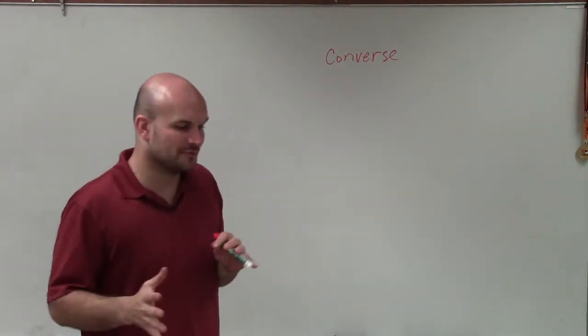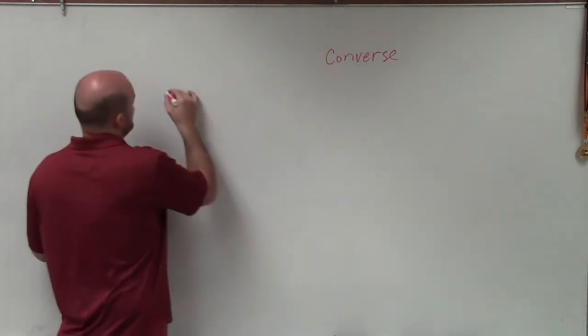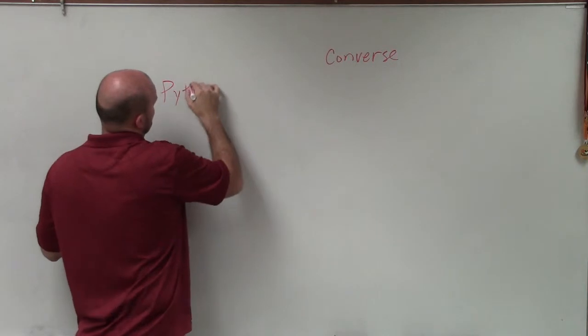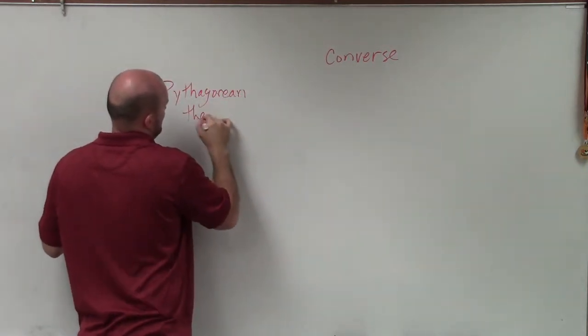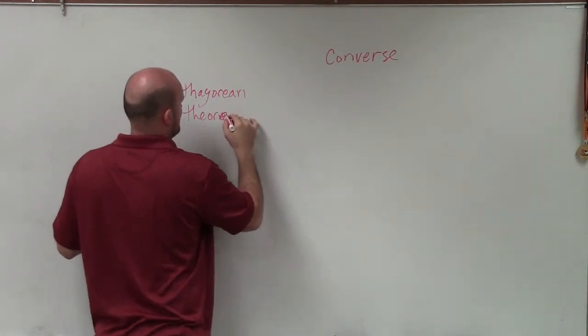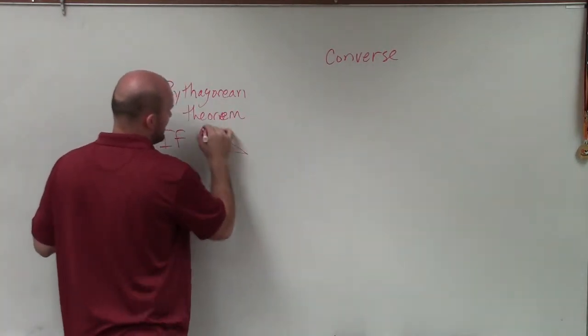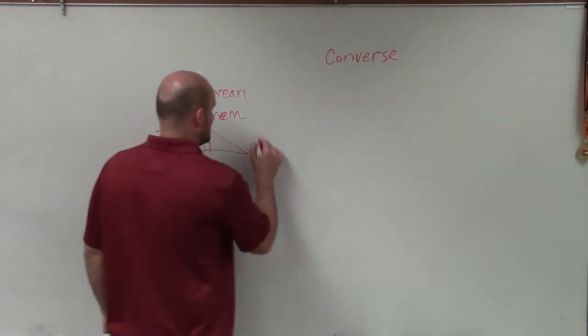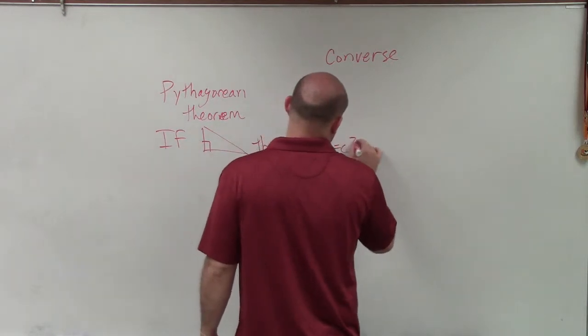So I'm going to use some notation to represent the Pythagorean theorem. The Pythagorean theorem states: if you have a right triangle, then a squared plus b squared equals c squared.